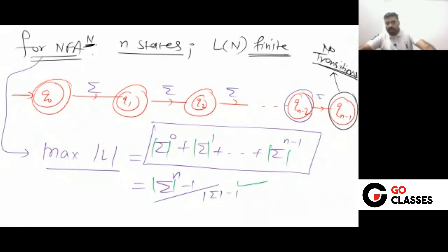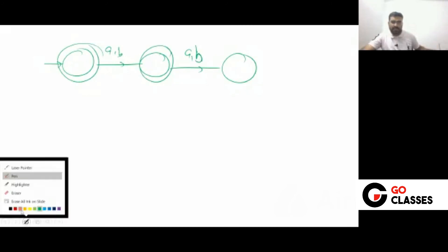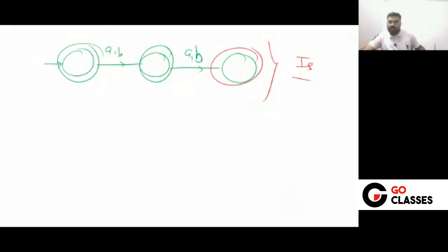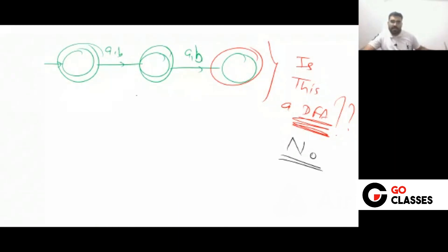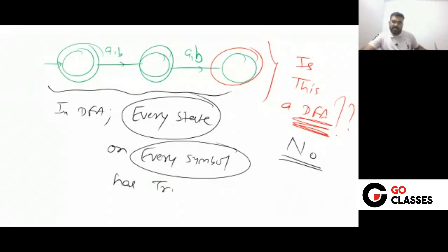Could we have done this in DFA also? No. In DFA, every state on every symbol must have a transition. So in DFA, if the last state has no outgoing transitions, it is not a valid DFA. We cannot leave a state without transitions in a DFA. That's why the DFA formula stops at sigma^(n-2).